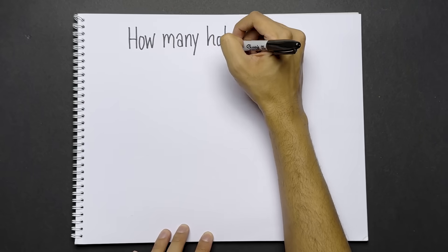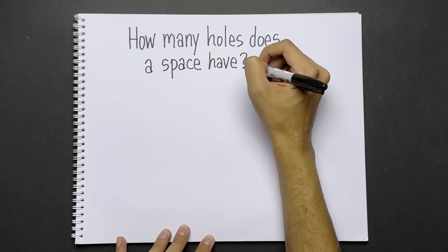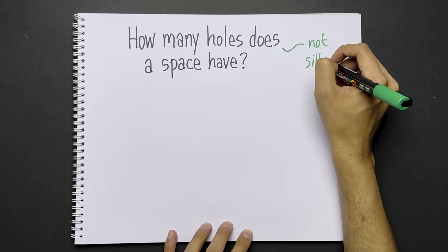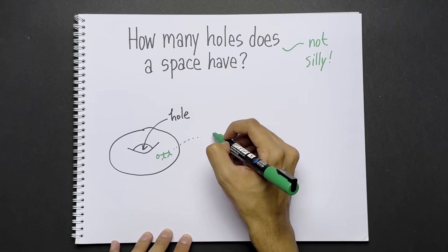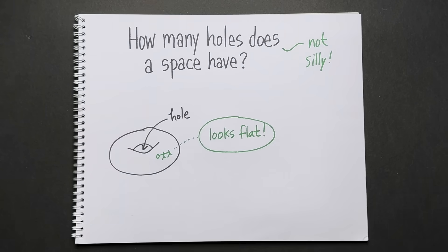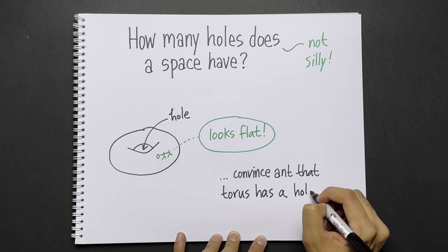The basic question in algebraic topology is, how many holes does a space have? This is not as silly of a question as it may seem. For example, when we look at a torus, we can clearly see that there is a hole in the middle. But if you were an ant living on the surface of the torus, from your perspective, it looks flat.